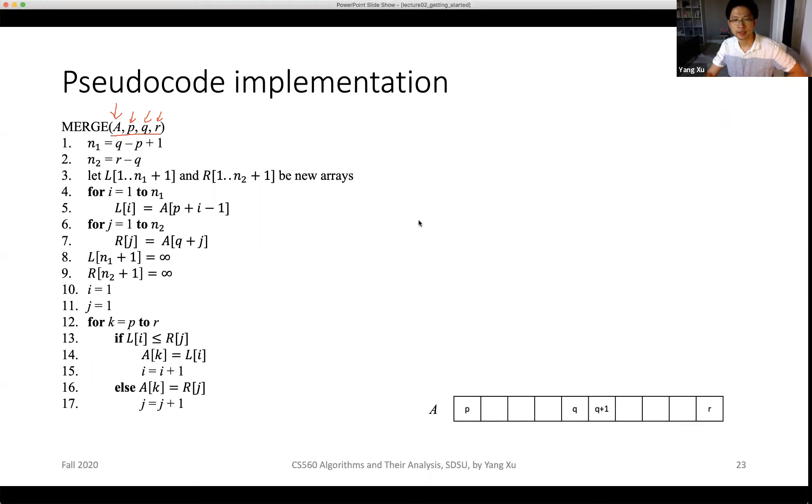We can represent this by drawing a grid with several grids to represent the input area. p is the first index and r is the ending index, and q is somewhere in between. q plus one is also a critical index, which is right after the index q. That's our representation of the input.